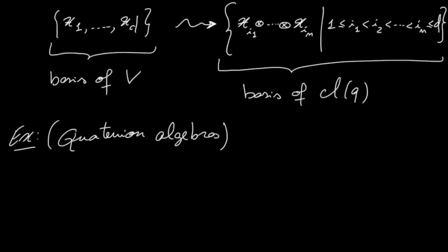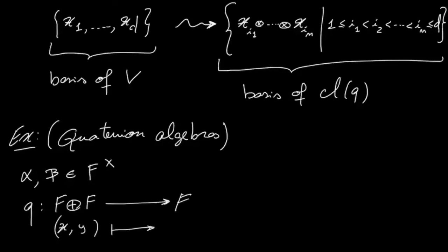So let's suppose that we have two invertible elements of our base field, and consider the following quadratic form defined from F plus F going to F that sends x and y to alpha x squared plus beta y squared.